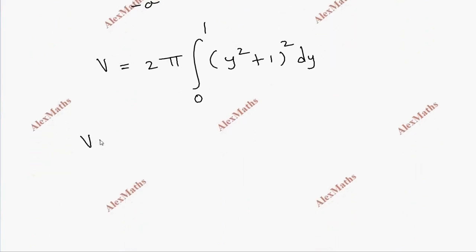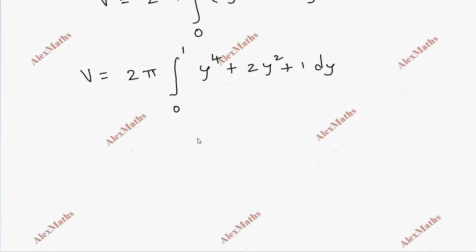This is the expansion. Volume 2 pi, 0 to 1. This is the expansion of y power 4 plus 2y square plus 1 dy.